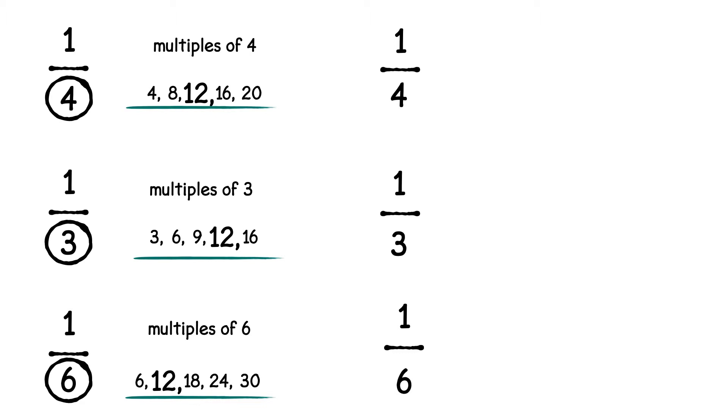So the first denominator is four. What does four need to be multiplied by to make twelve? Three. So we multiply both the numerator and the denominator of a quarter by three.